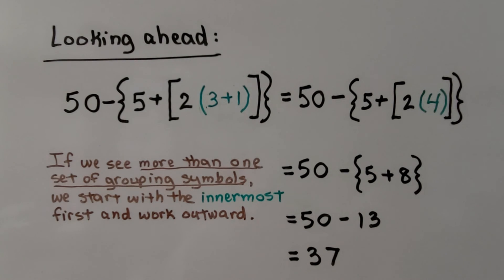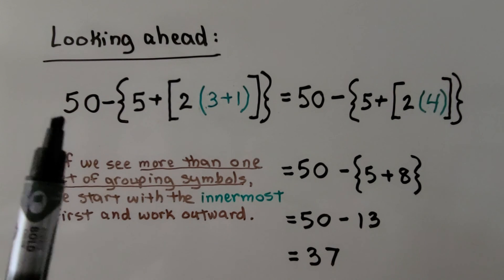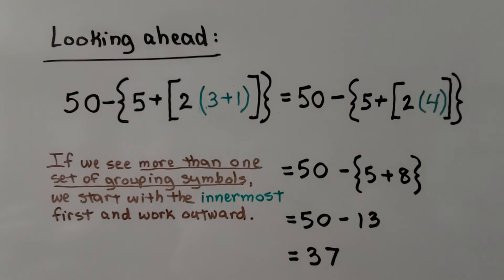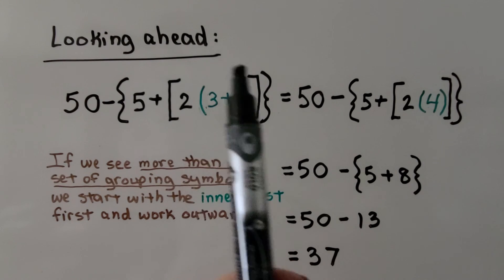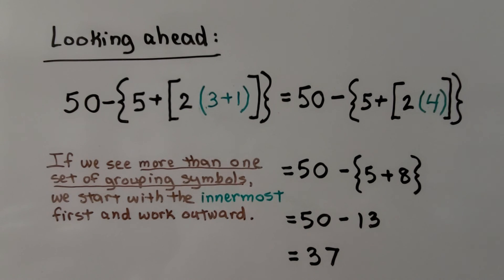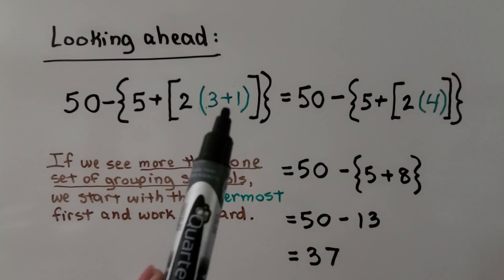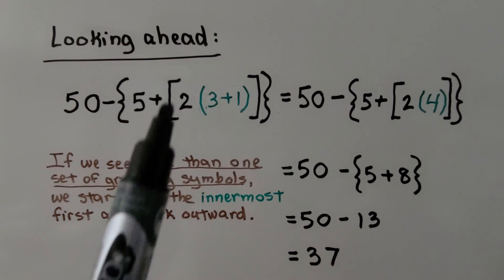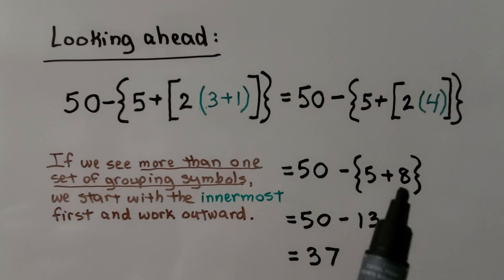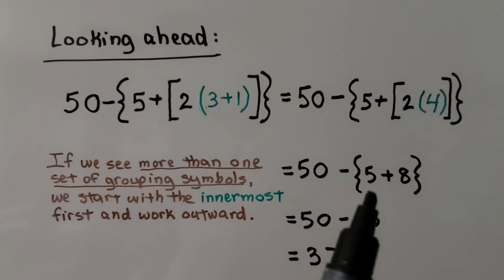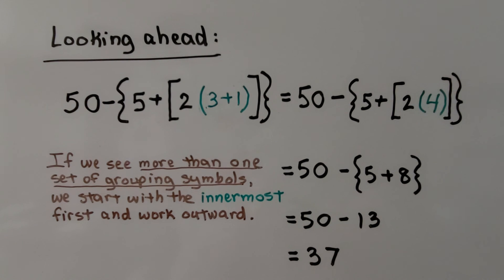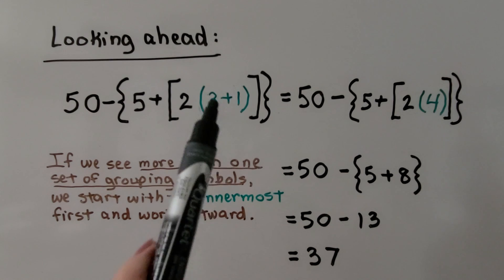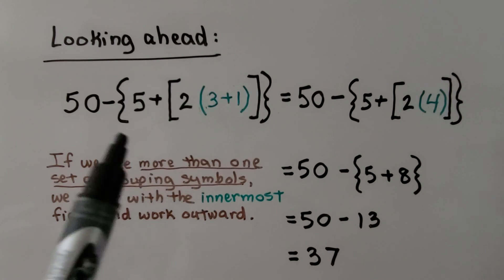As mentioned, we have braces and brackets too. If we see more than one set of grouping symbols, we start with the innermost first and slowly work outward. Starting with the innermost parentheses: 3 plus 1 is 4, so we have 2 times 4. Inside the brackets: 2 times 4 is 8. Inside the braces: 5 plus 8 is 13. Then 50 minus 13 equals 37. Start at the innermost grouping symbols and slowly work your way outward.